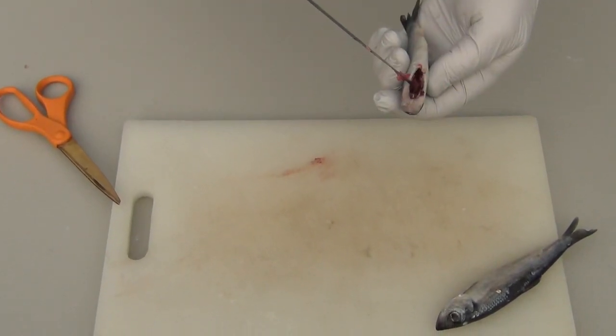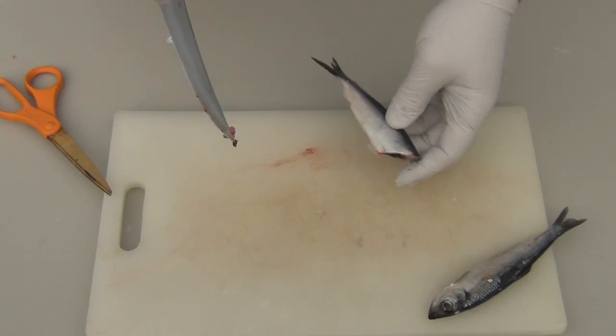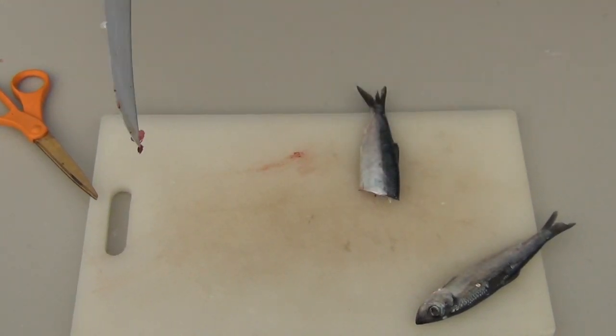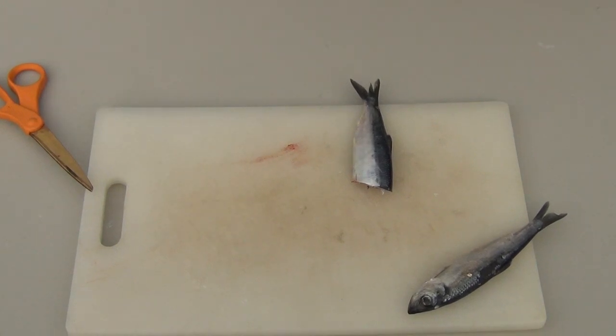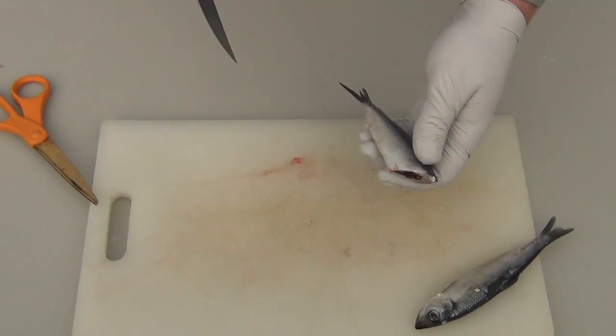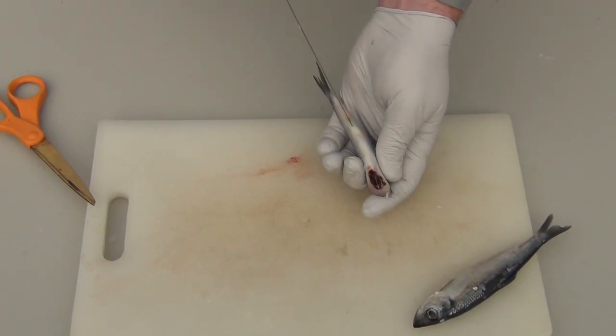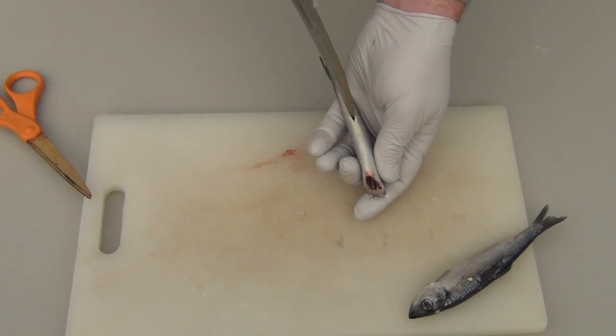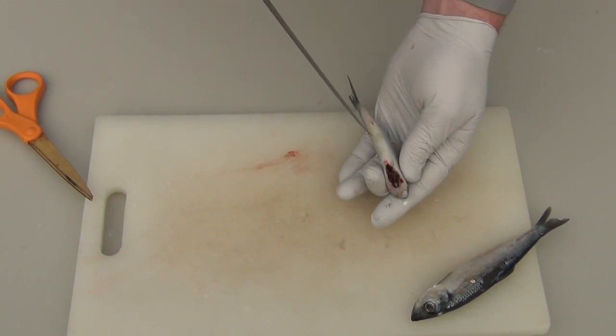Now we're going to have water going into the stomach cavity, so we need to have a way for water to get out. What we're going to do is we're going to go to the anal cavity and we're just going to make a small slit in there. This slit will allow water to go through the stomach cavity and actually exit your herring to last a little bit longer.